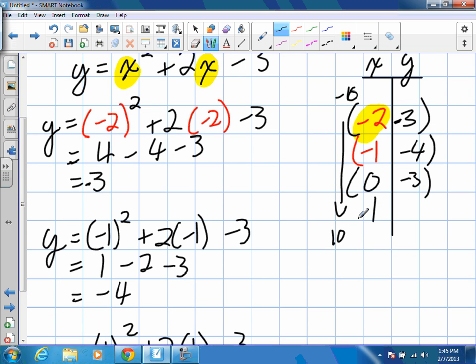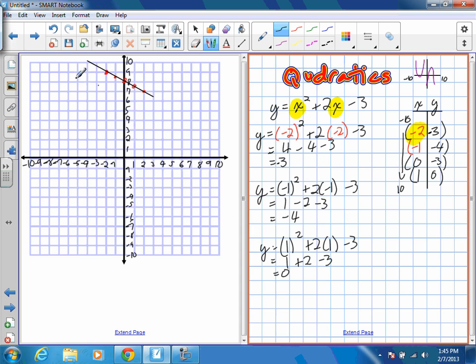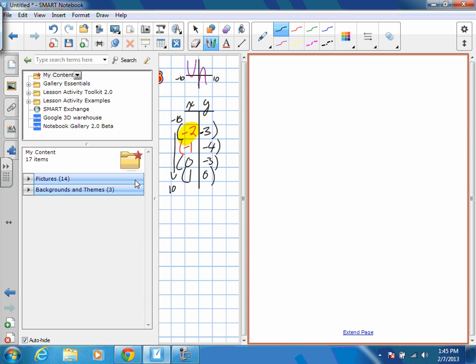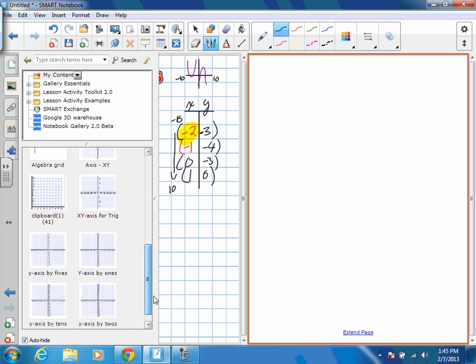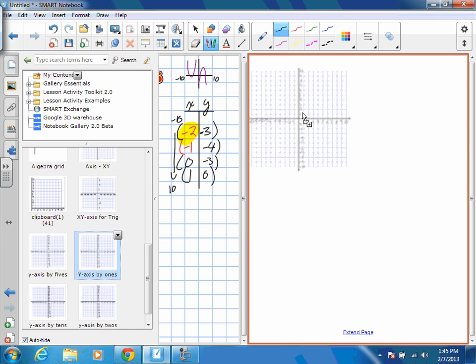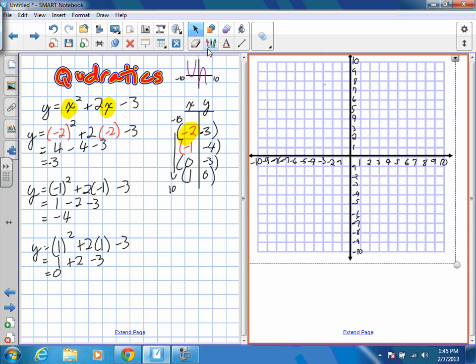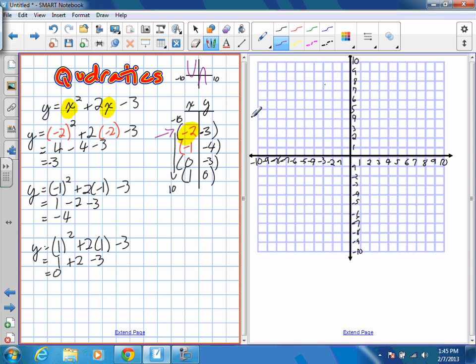So, we're going to do the exact same thing we had done before. We're going to put up another page with a graph. Here it is. So, we're going to take those coordinates and we're going to plug these values in and try to create what should look like a parabola. So, negative 2 and negative 3. X is negative 2. Y is negative 3. Negative 1 and negative 4. 0 and negative 3. And then 1 and 0.